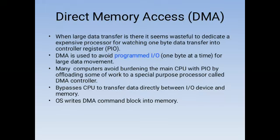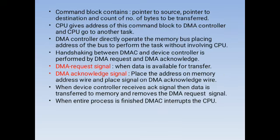The operating system writes the DMA command block into main memory. The command block contains: pointer to source (from where we want to copy the data), pointer to destination (where we want to transfer the data), and a count of how many bytes we want to transfer. The CPU gives the address of this command block to the DMA controller and then goes to another task.